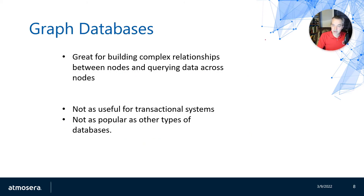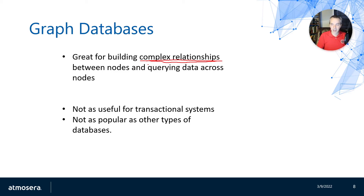Graph databases excel at building out complex relationships between nodes. With hierarchical databases like the table API or Mongo, relationships are fairly fixed within the document. Graph databases allow entities to be arbitrarily related to any other entities, and you can query across those data nodes arbitrarily — starting from one node and traversing different edges to other nodes to retrieve data depending on your query. This makes graph databases very useful for representing state and relationships among many different arbitrary objects.